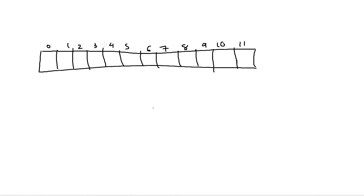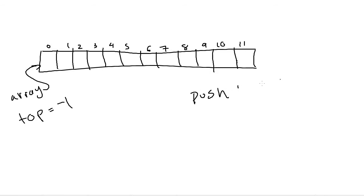We're going to store two pieces of information: the array itself, and which element is the top element. If the stack is empty, top is equal to negative one. Now let's say we want to push the letter B onto the stack. That's going to go into slot zero, and zero becomes the new top. So the B goes there and top is set from negative one to zero. Now we have one item in the stack at the top, in slot zero.